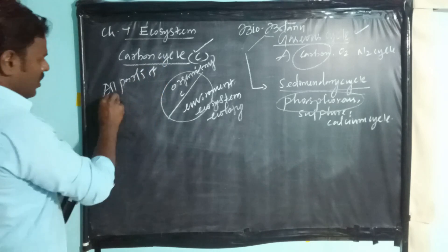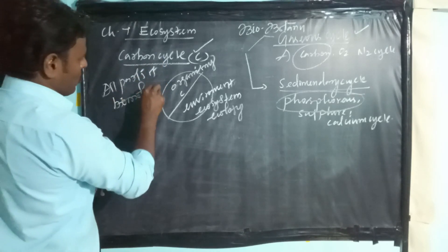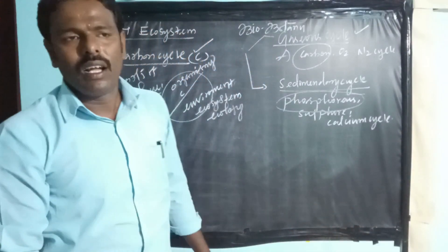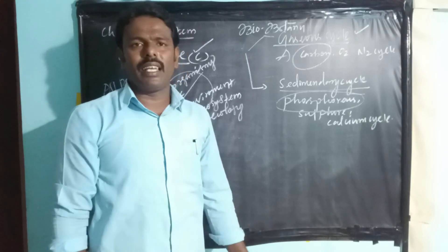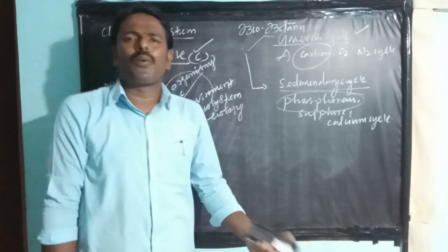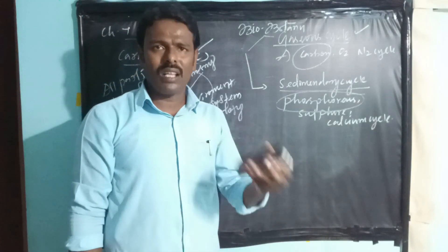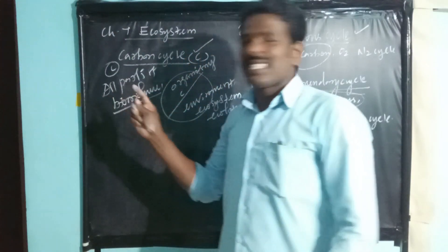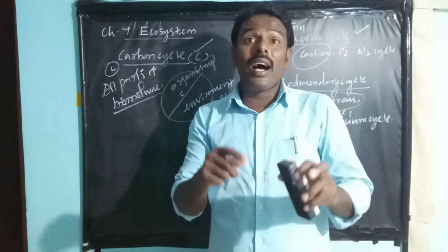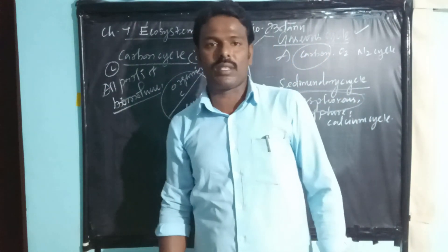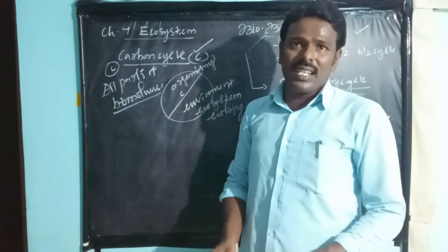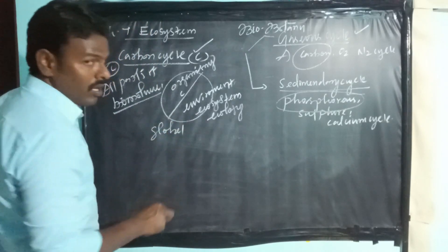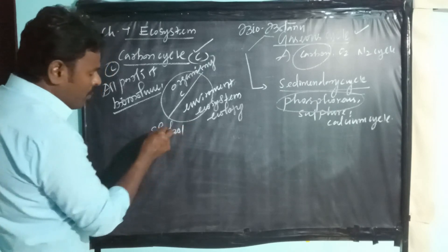Biomolecules — as we learned in previous classes — include nucleic acids like DNA and RNA, carbohydrates, proteins, and lipids. All these substances contain the carbon component. Therefore, this substance is unavoidable for all biomolecules, and it is also important for changes in global climate.